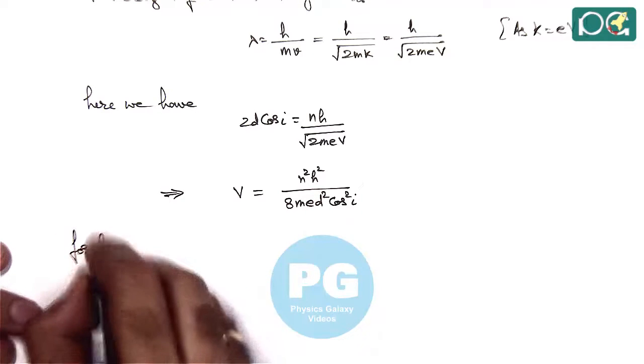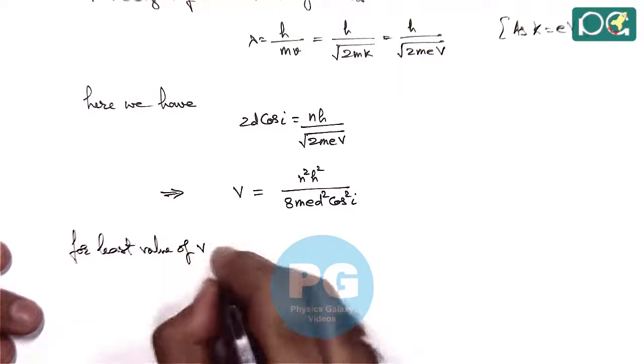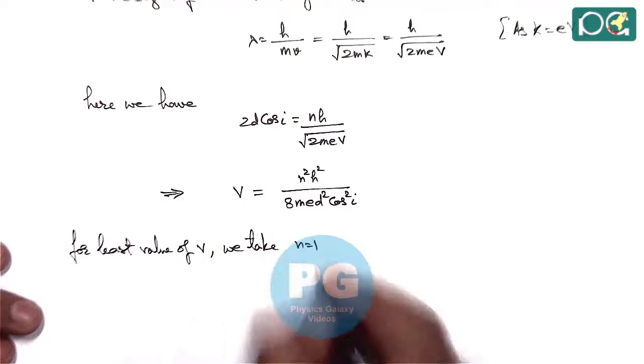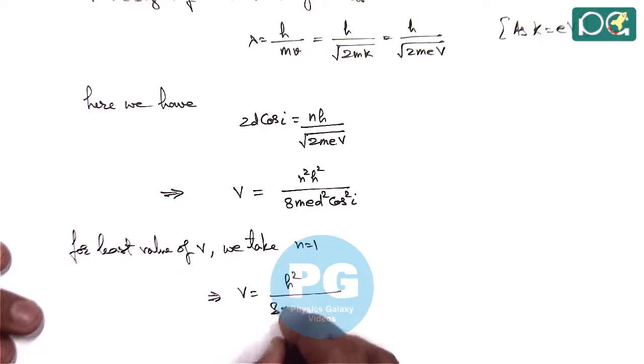For least value of V, we take N is equal to 1. And correspondingly the value of V we are getting is H square by 8MED square cos square I.